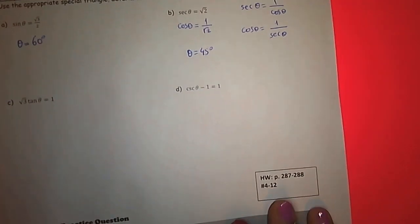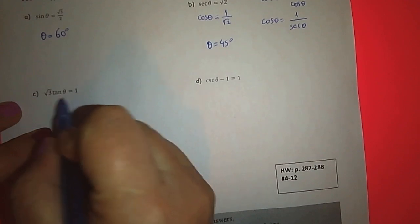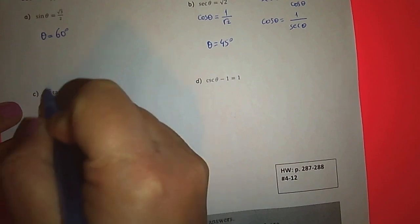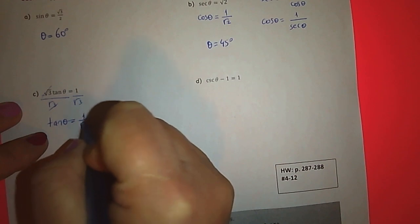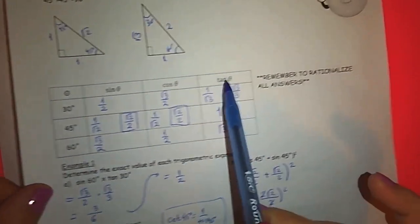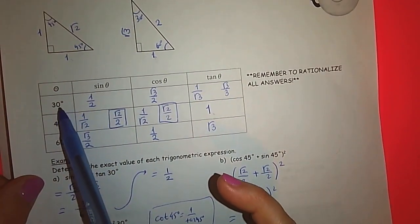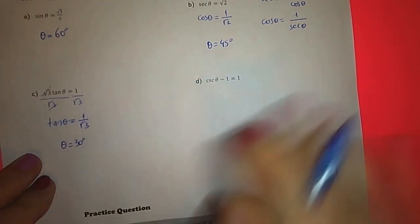Let's look at part c: root 3 times tangent theta equals one. To solve for theta we need to isolate tangent theta, so we divide both sides by root 3. That gives us tangent theta equals one over root 3, or root 3 over 3. If tangent theta is root 3 over 3, then theta must be 30 degree.